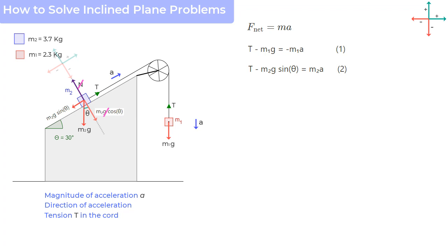In fact, we should write the equation F is equal to ma in this direction as well. And that would be N minus m2g cos theta is equal to m2a in vertical direction. But then, since a in vertical direction is zero, the right hand side becomes zero. And what you get is N is equal to m2g cos theta, which we had figured out even before we wrote the equation.